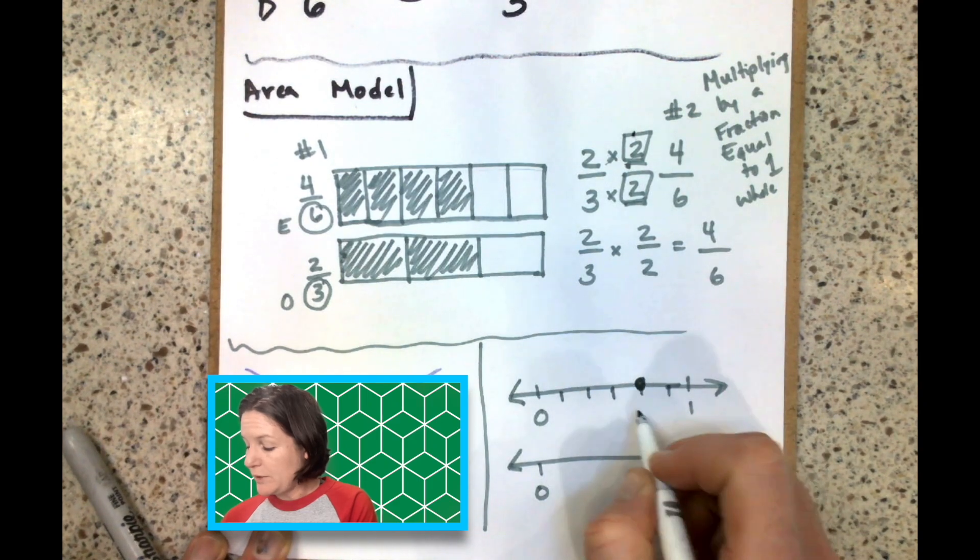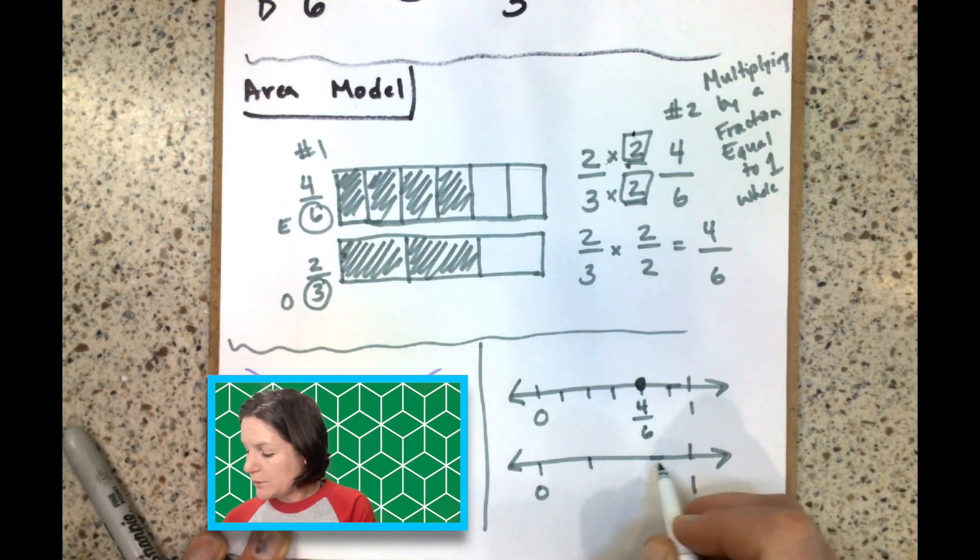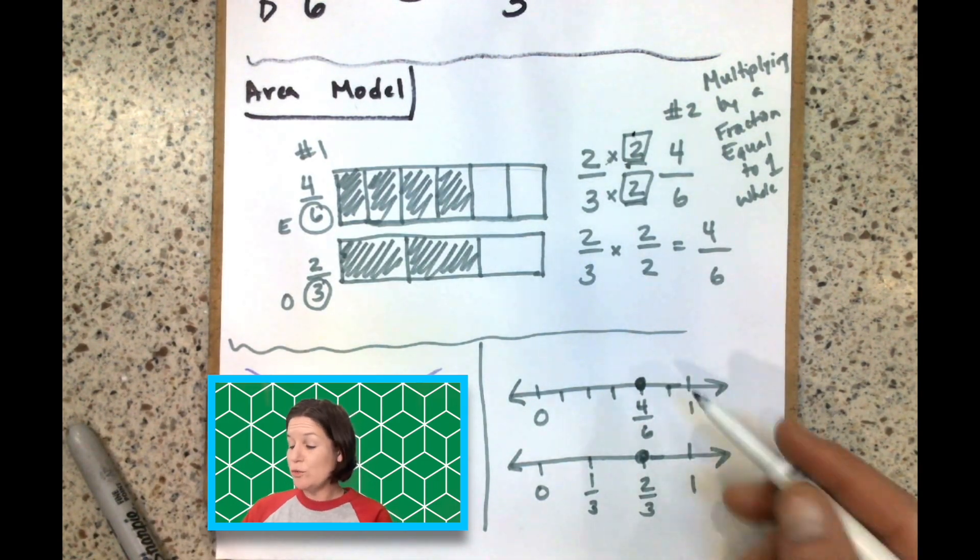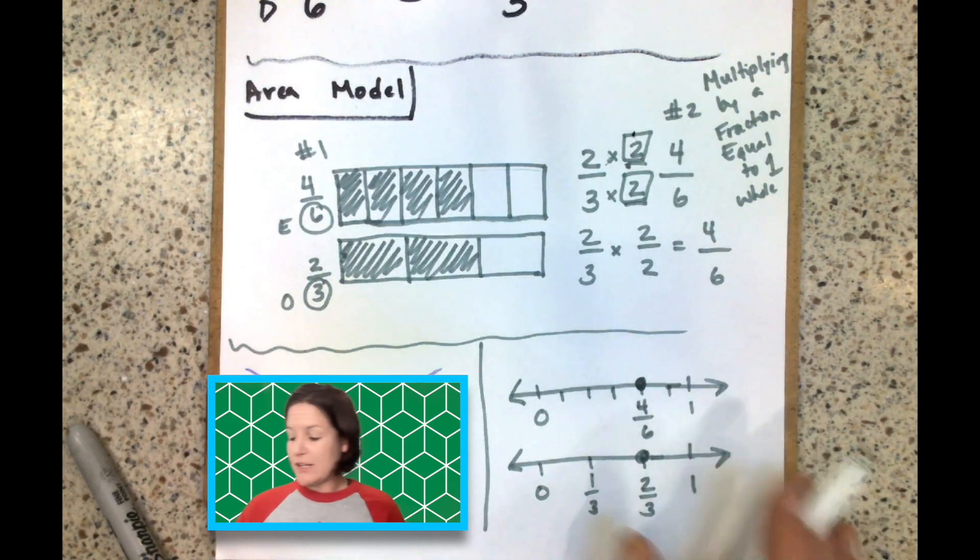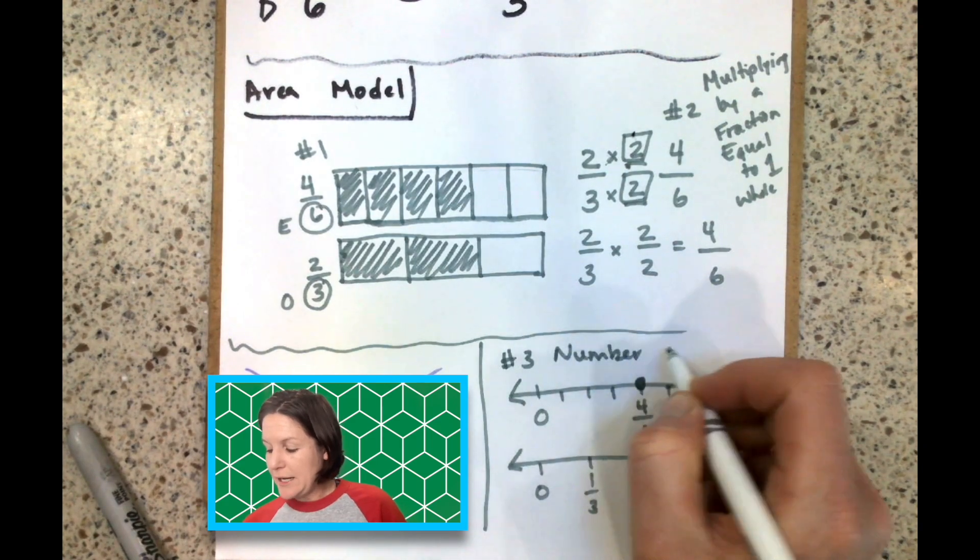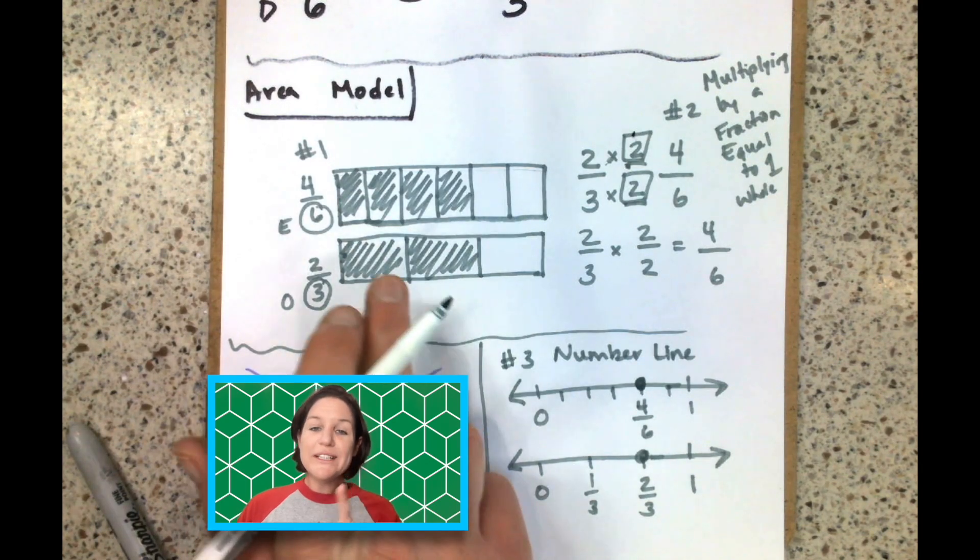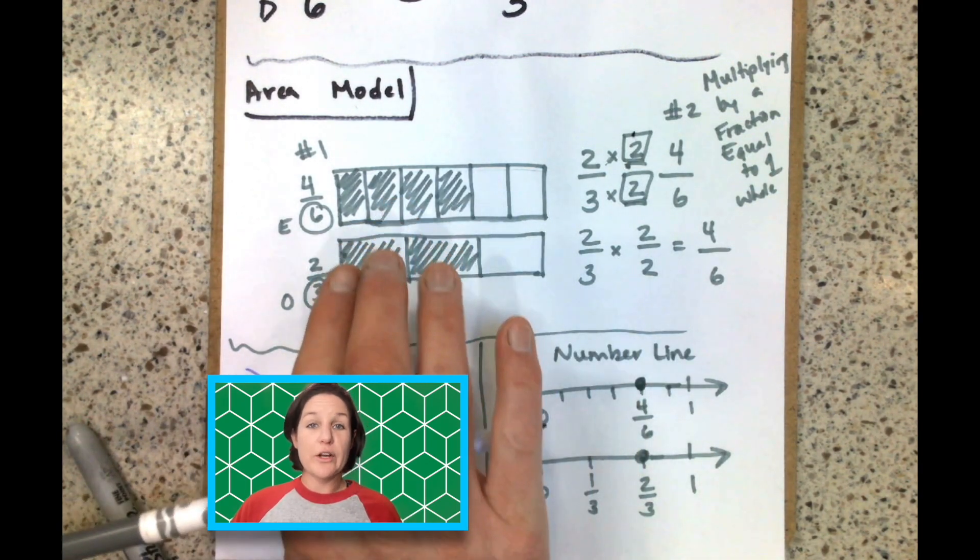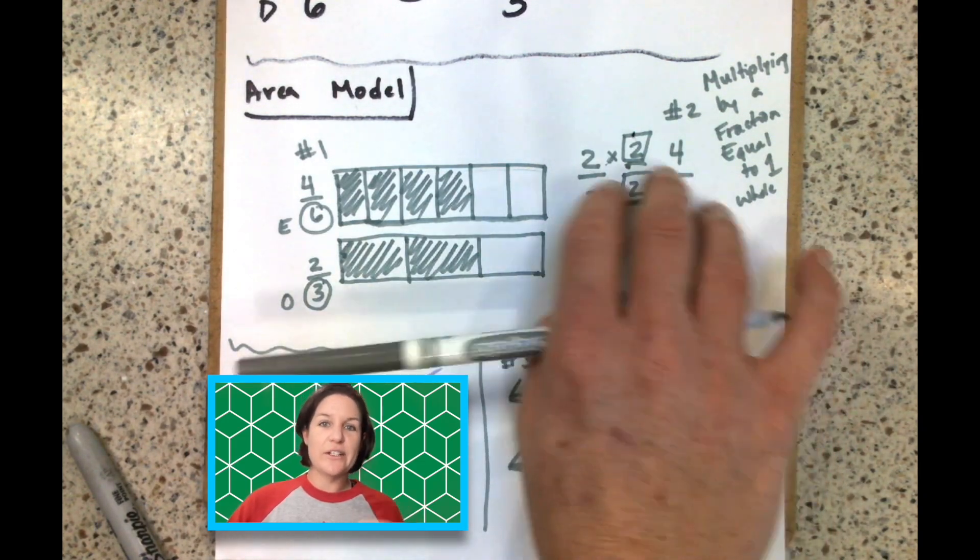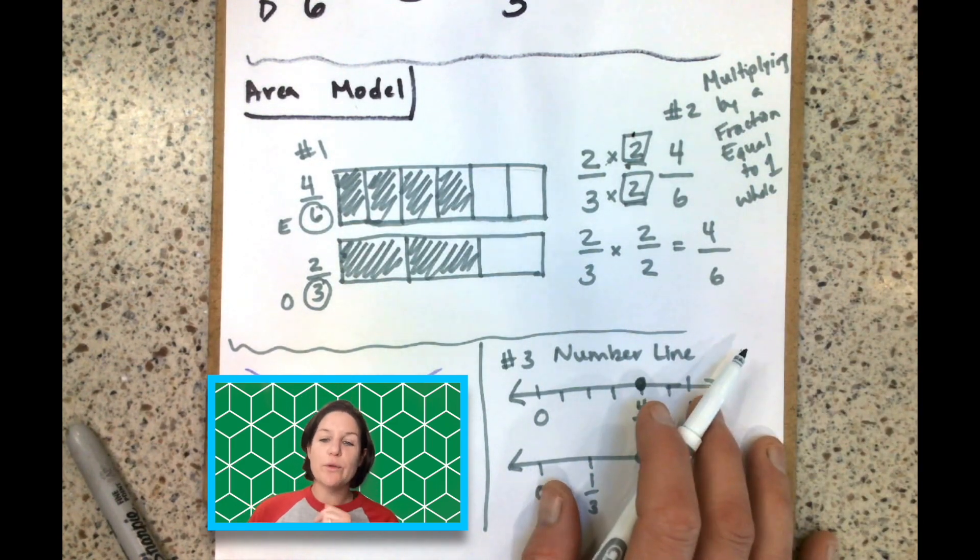All right. So four sixths would be right here. And then two thirds, boom, boom, would be right here. Okay. And as you can see, they do look equivalent there. So that's way number three is on a number line. Now this is not my favorite way to compare fractions. I actually like showing students, like really getting them comfortable with area models.